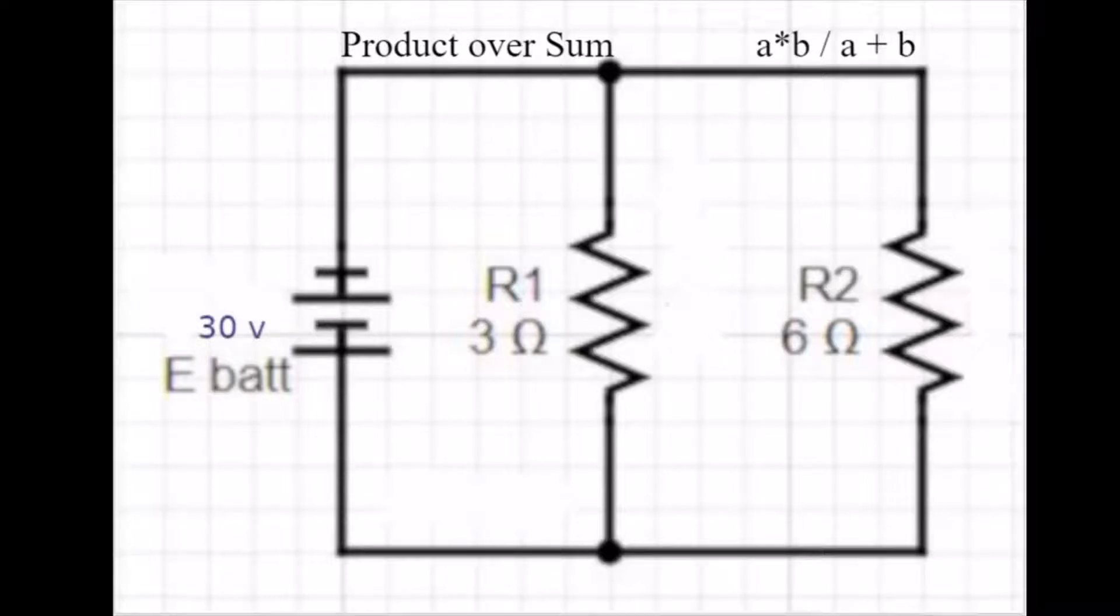There are a lot of very complex formulas we can use that involve reciprocals and so on for finding out resistance in a DC parallel circuit, but I want to show you the simplest way of doing it, and this is in a circuit that has different sized resistors in parallel, but it only has two of them.